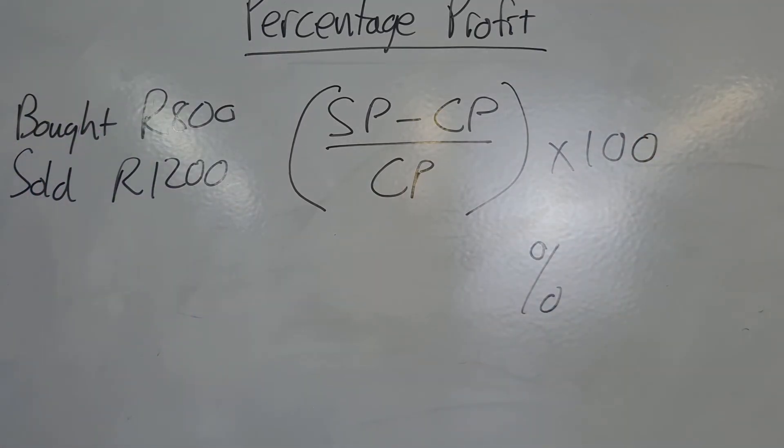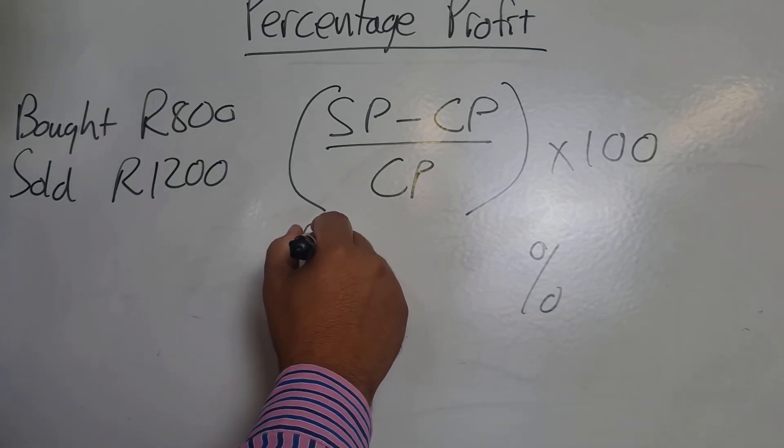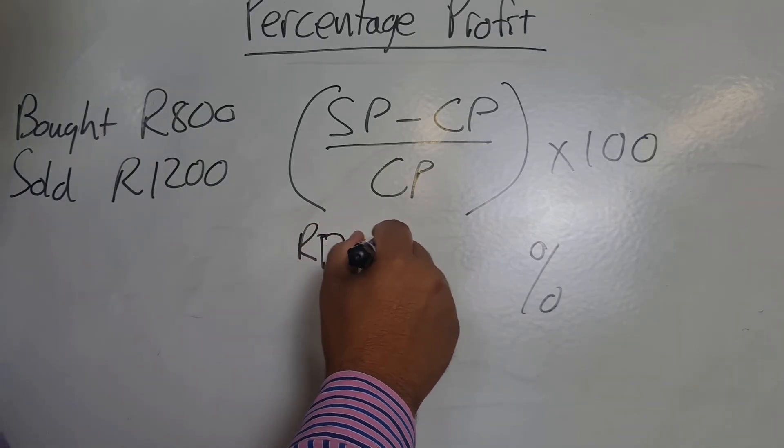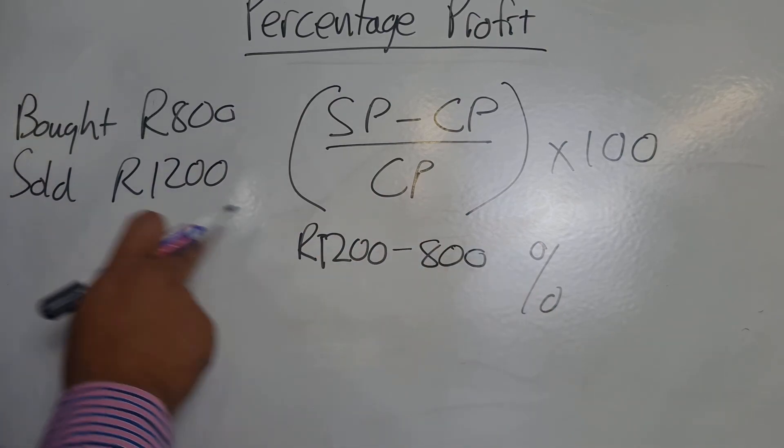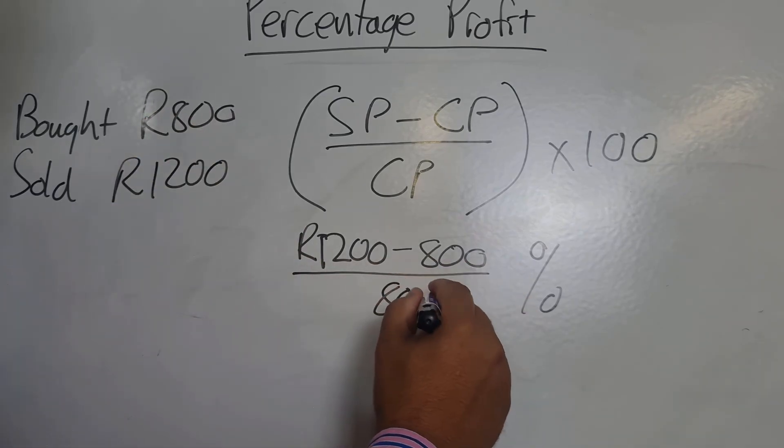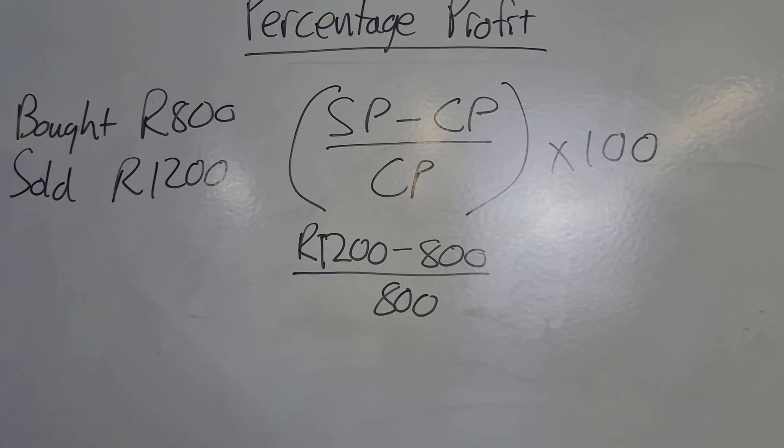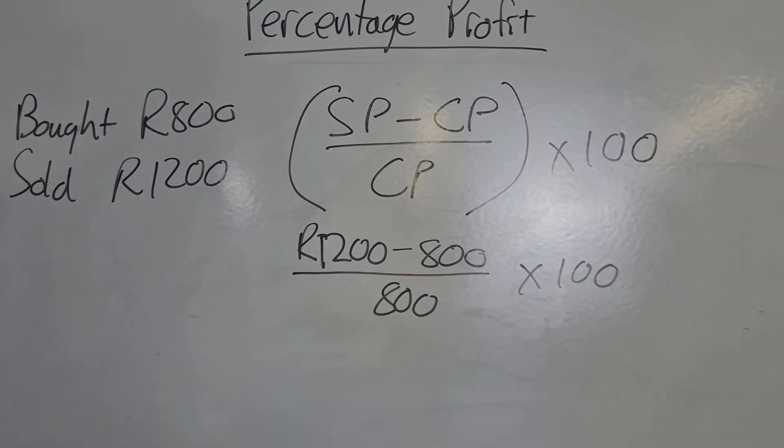So do we have the figures? Yes we do. We've got 1200 minus 800, remember the 1200 our selling price, 800 our cost price. We're going to divide that by 800, and what do we end up with? If we do that calculation and multiply it by 100, we should end up with 50 percent profit.